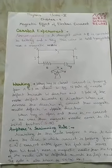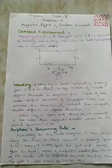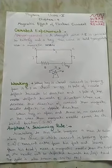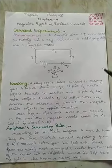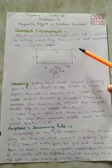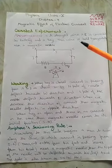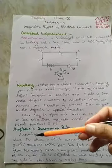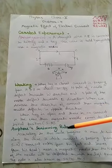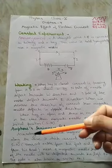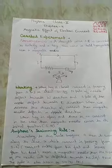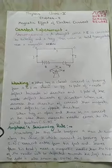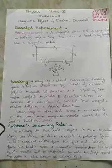This is all about the magnetic field due to a current carrying conductor. First is Oersted's experiment, done by the scientist Oersted, and second is Ampere's swimming rule, done by the scientist Ampere. Thank you, students, and God bless you.